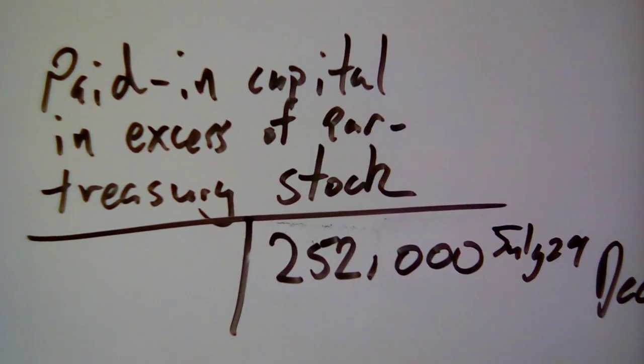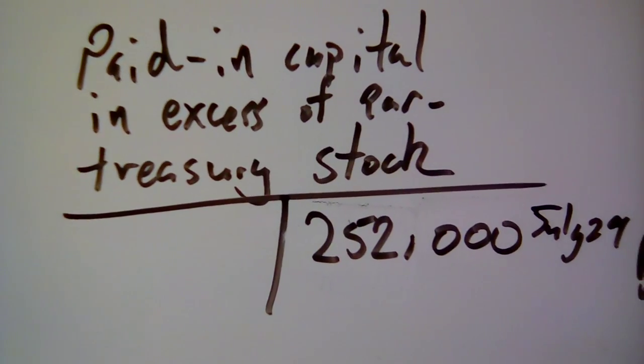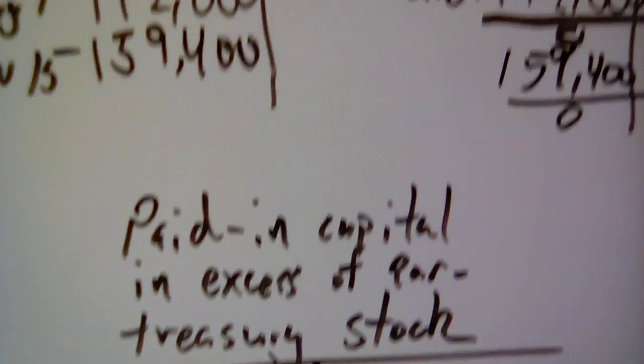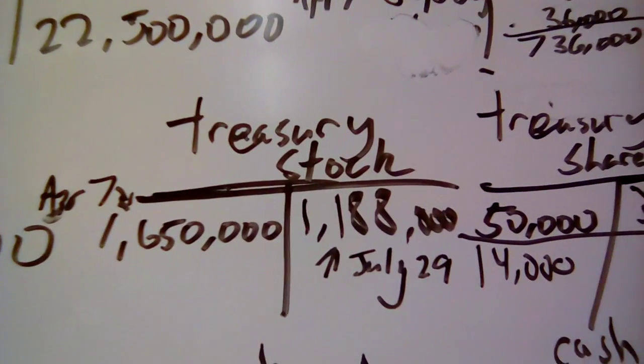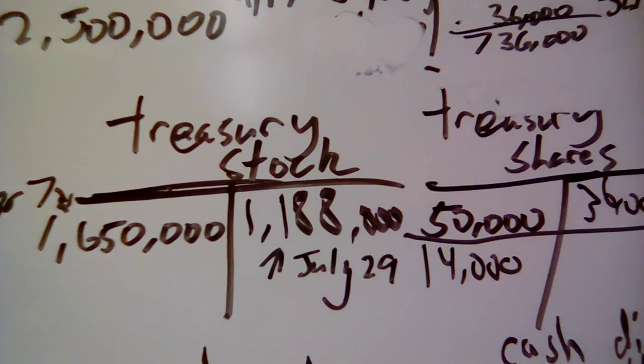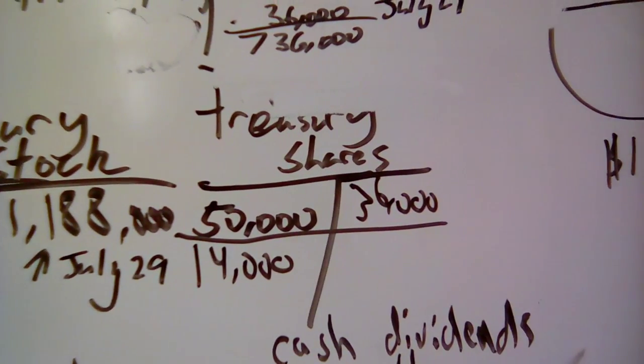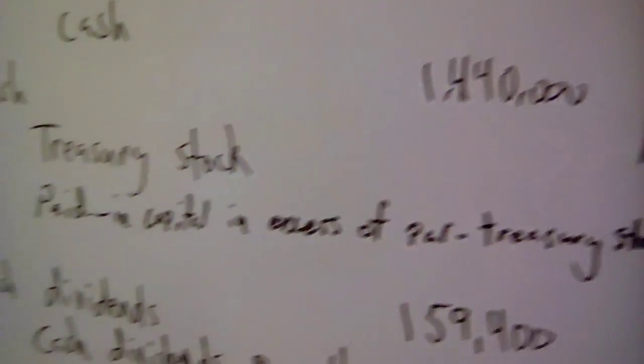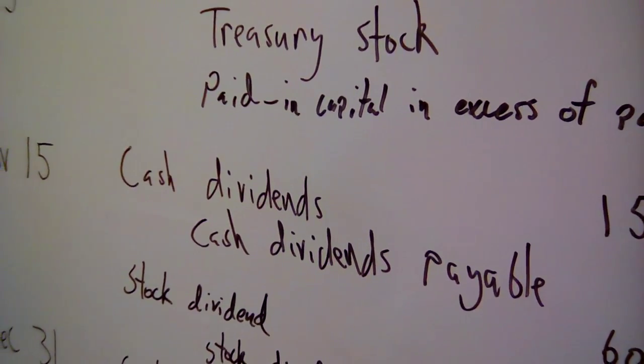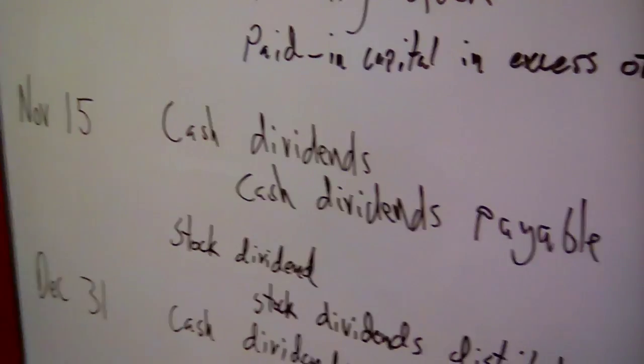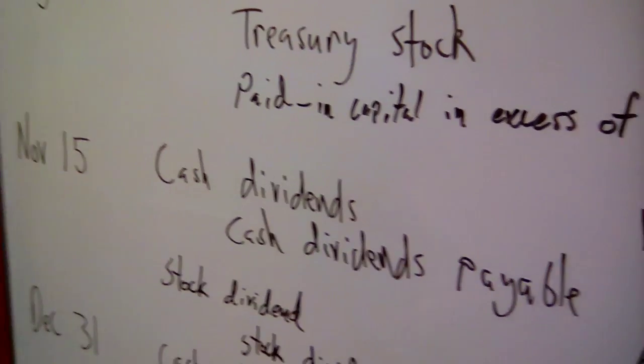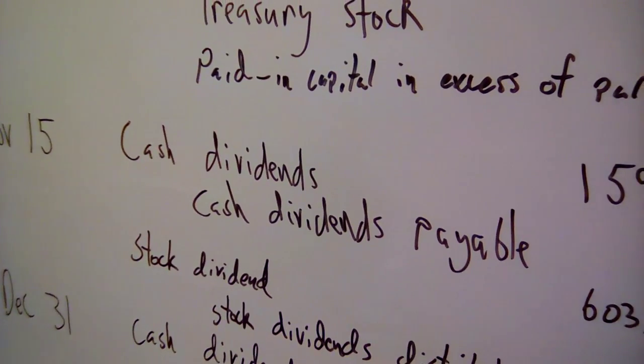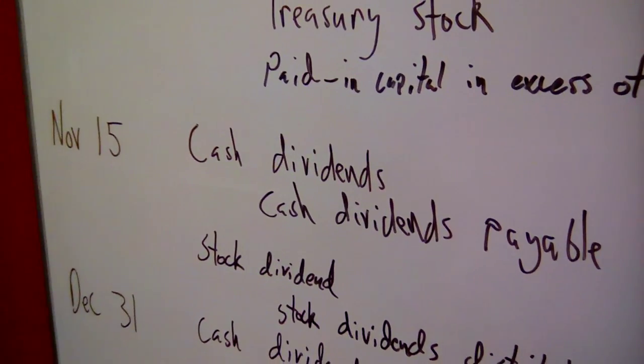So where is that? Okay. Paid in capital, excess of par treasury stock gets its own account. And then the treasury stock goes down by the $1,188,000 and the shares go down by $36,000, which leaves only $14,000 left. And then, so treasury is pretty interesting. It's a good strategy if you want to reduce the amount on the market.